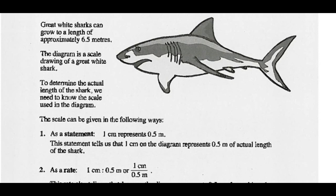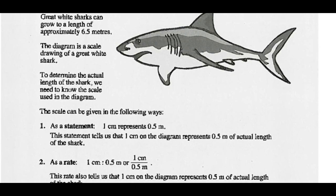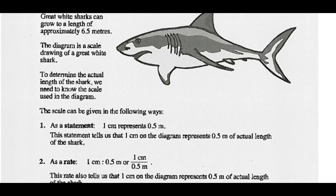Great white sharks can grow to a length of approximately 6.5 meters. The diagram to the right is a scale drawing of a great white shark. To determine the actual length of the shark, we need to know the scale used in the diagram.